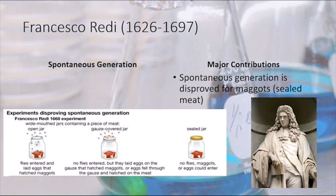Below is a picture depicting Francisco Redi's experiment. There are three jars, and each jar has a piece of meat. The first jar is open, so flies could come in, lay their eggs, and the eggs would hatch into maggots. The second is the gauze-covered jar — no flies entered, but they laid their eggs on the gauze, which hatched into maggots, or eggs fell through the gauze and hatched on the meat.